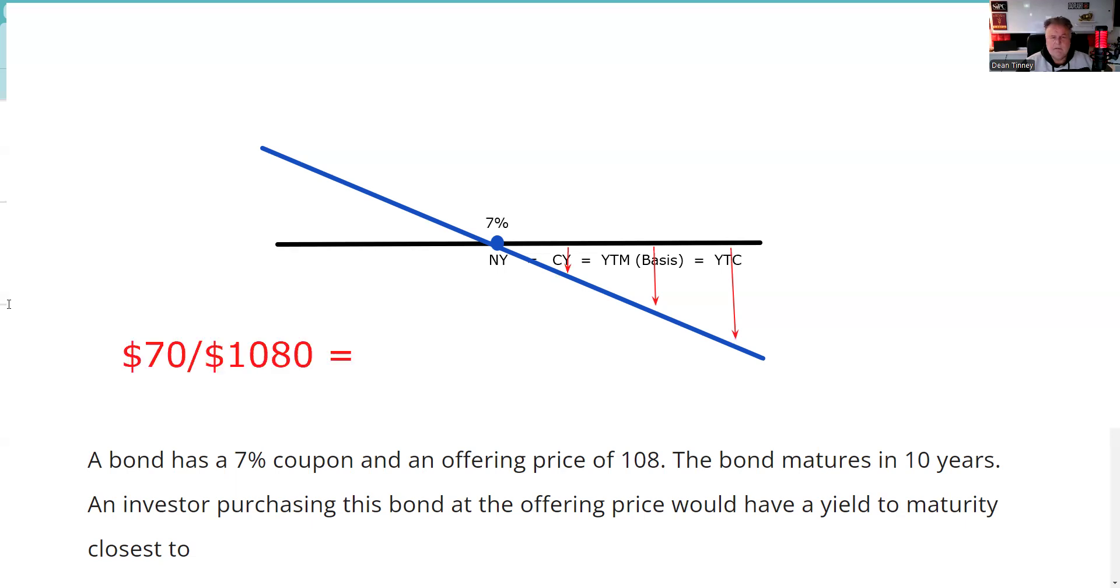But if I do the current yield, that would also help me orient myself. So here I say, okay, well, I should be able to do current yield: what an investment pays me by what it costs me. And when I do the current yield here, I get 6.48. So now I know yield to maturity has to be something less than seven, and it has to be less than 6.48.